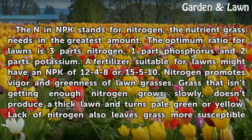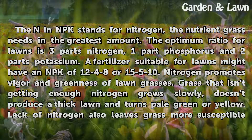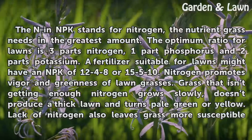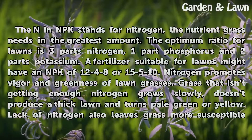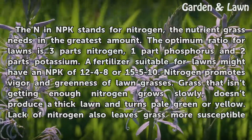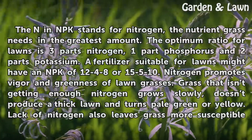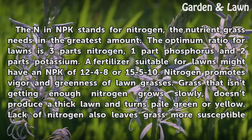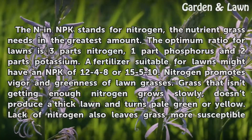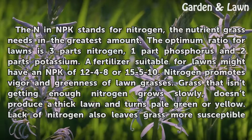The N in NPK stands for nitrogen, the nutrient grass needs in the greatest amount. The optimum ratio for lawns is three parts nitrogen, one part phosphorus, and two parts potassium. A fertilizer suitable for lawns might have an NPK of 12-4-8 or 15-5-10.